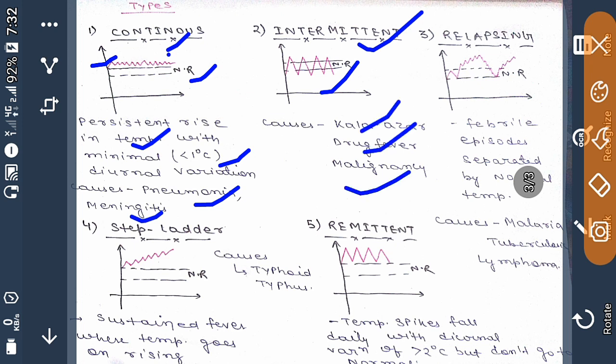Relapsing fever: in this, febrile episodes are separated by normal temperature. You are seeing the graph, and this can be seen in malaria, tuberculosis, and certain lymphomas. Step ladder fever is an example of sustained fever where temperature goes on rising, as you're seeing in the graph. This occurs in typhoid or typhus.